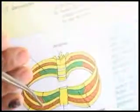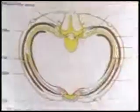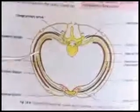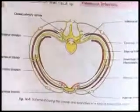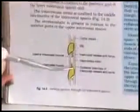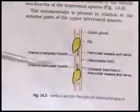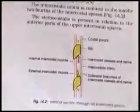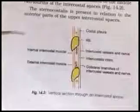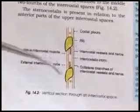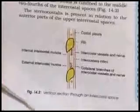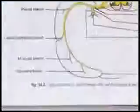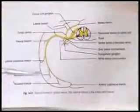The innermost intercostal muscle lies in the middle two-fourths of the space. It arises from the rounded border above the costal groove. This muscle is supplemented by the small subcostalis posteriorly and the sternocostalis muscle anteriorly. These three components form the deepest layer of the intercostal muscles. These muscles are supplied by the intercostal nerve running in between the muscles.